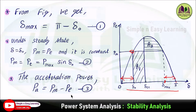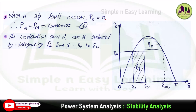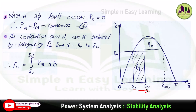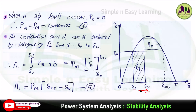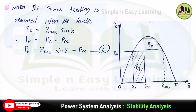The accelerating power equals mechanical power minus electrical power. When a three-phase fault occurs, electrical power equals zero, so accelerating power equals mechanical power P_m, which is constant — this is equation four. The acceleration area A1 is evaluated by integrating the accelerating power from del_naught to del_cc: A1 = integral from del_naught to del_cc of P_m d(del). Since electrical power is zero in this region, integrating gives A1 = P_m × (del_cc − del_naught) — this is the fifth equation. Once the fault is cleared at del_cc, power is resumed and electrical power becomes P_max × sin(del), with accelerating power equal to P_max × sin(del) − P_m — this is the sixth equation.